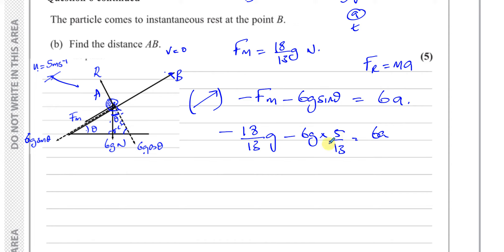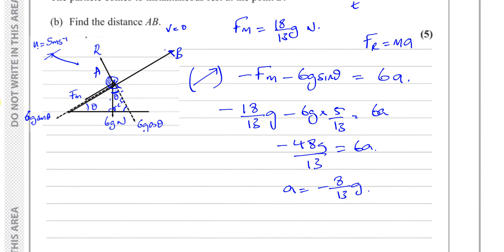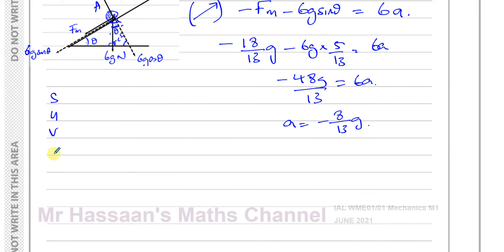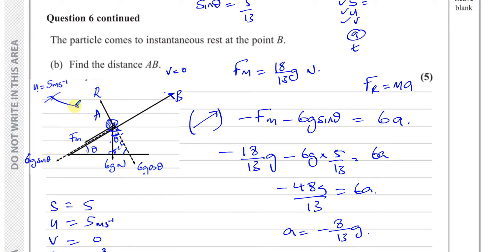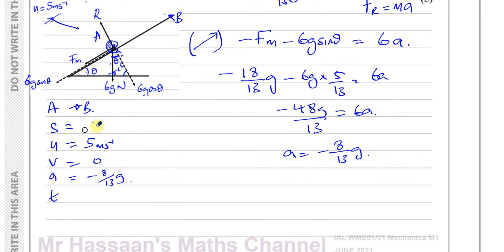That's −48g/13 = 6a. Dividing both sides by 6, we get a = −8g/13. I'll leave it in terms of g for now. So the acceleration is −8g/13 m/s². Now I can set up the SUVAT values: S is unknown, U = 5 m/s, V = 0, A = −8g/13.